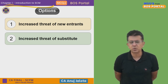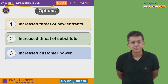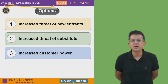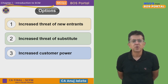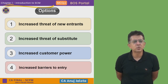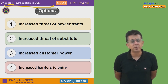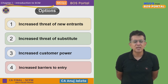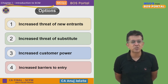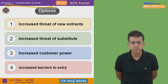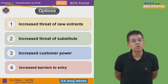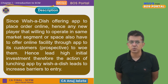Increased customer power — I don't think this has anything to do with customer power; we are simply offering a new feature for the customer. The fourth option is 'increased barriers to entry,' which means new competition will now be tougher to enter. Out of the four options, the fourth makes the most sense, because any new company entering the fast food business will have to match what we offer — that is, 30-minute delivery. If they cannot offer that, we will always have a competitive edge.